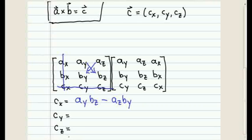Now in order to get the next component, CY, what you need to do is take all the columns in your matrix and shift them to the left by one. What happens is that the middle column before AY, BY, and CY becomes the first column. And the original first column, AX, BX, and CX is now the third column.